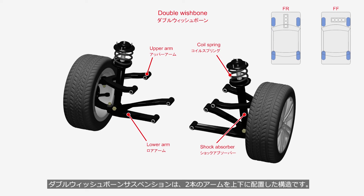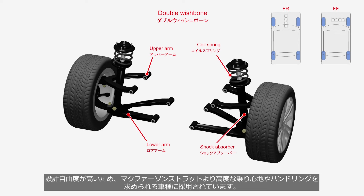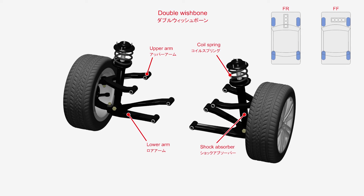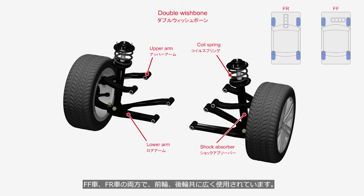Double wishbone suspension is a structure that features two arms arranged vertically. It is named so because the A-shaped arm used in the early stages resembled the wishbone of a bird. Due to its high design flexibility, it is adopted in vehicle models that require superior ride comfort and handling compared to McPherson struts. It is widely used in both FF and FR vehicles, for both front and rear wheels.